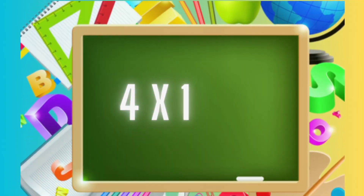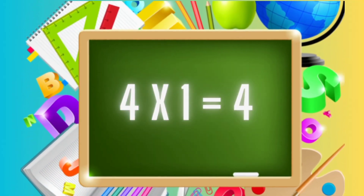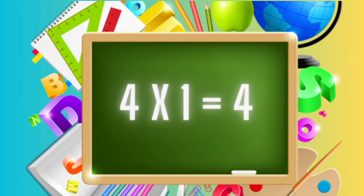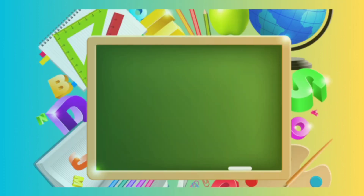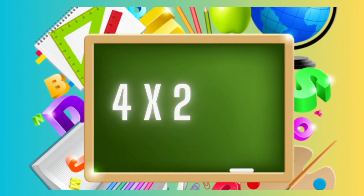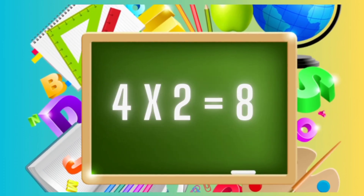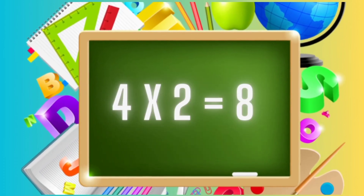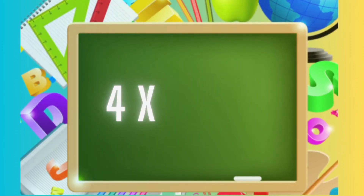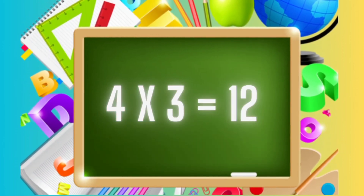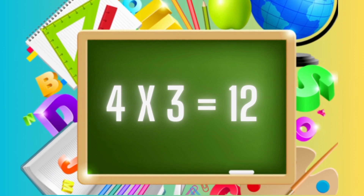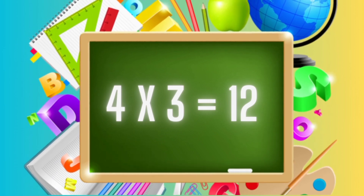Four ones are four. Four ones are four. Four twos are eight. Four twos are eight. Four threes are twelve. Four threes are twelve.